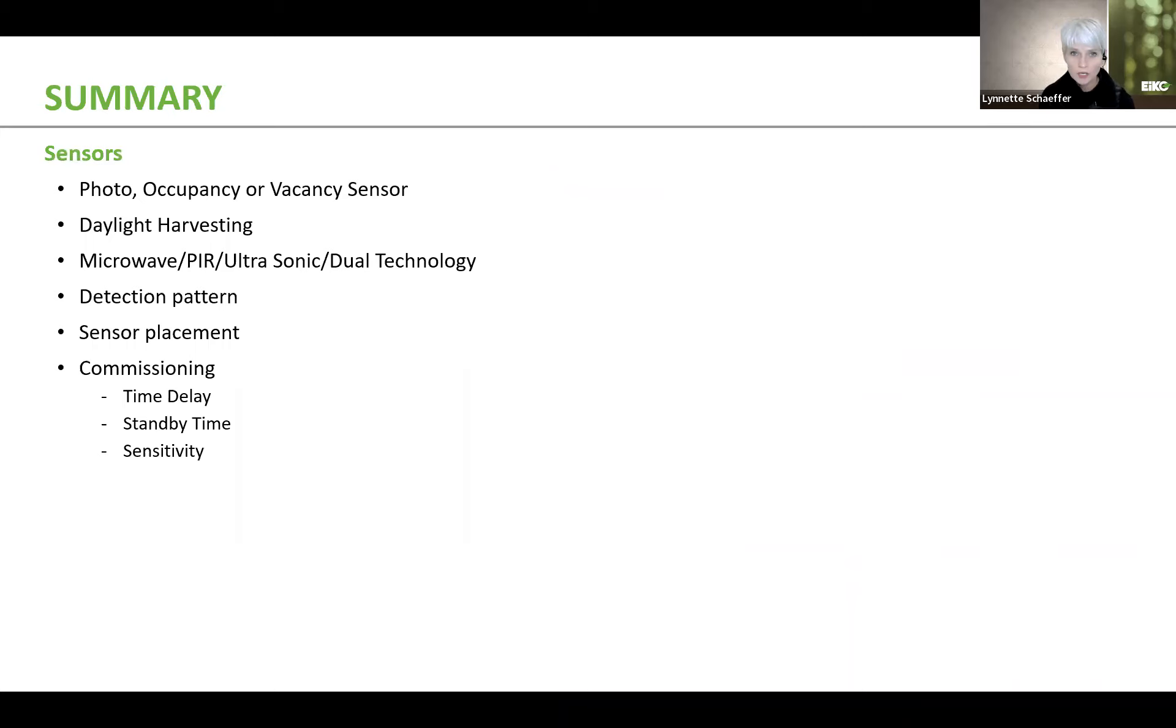So in summary, when incorporating sensors into a project, it's really important to consider what type of sensor do you need? A photo sensor, an occupancy sensor, or a vacancy sensor. If you are using a vacancy sensor, keep in mind you've got to have a switch that goes with it because remember, you have to be able to manually turn those on. Also, are there south facing rooms that could utilize daylight harvesting? Then you probably want to consider a daylight harvesting sensor.